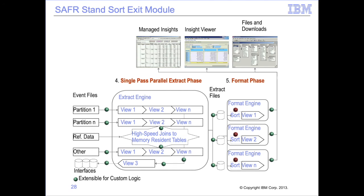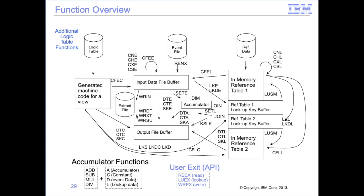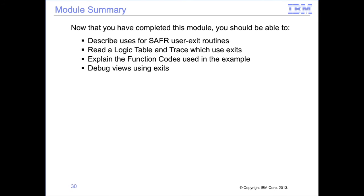These views are never found in the metadata repository — they are temporary views only in the run's VDP. They are required in the VDP for GBB-MR88 to refer to in processing the permuted records. In this module, we examined the following logic table functions: RENX — read exit, new event file record, user exit; LUEX — lookup exit, calling a user exit; and WREX — write user exit calls. This module described SAFIR user exit routines. Now that you've completed this module, you should be able to describe uses for SAFIR user exit routines, read a logic table and trace which uses exits, explain the function codes used in the example, and debug views using exits.